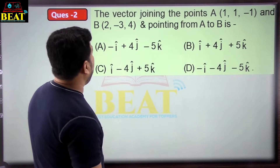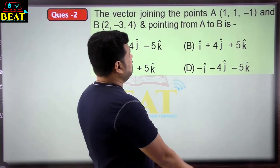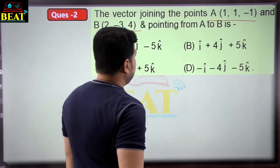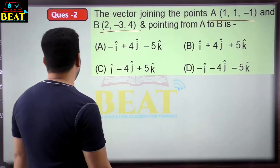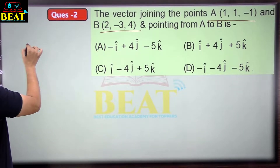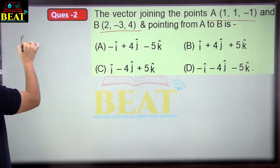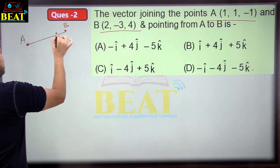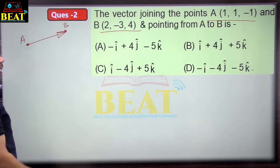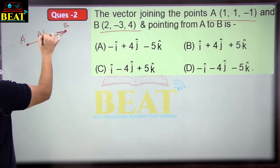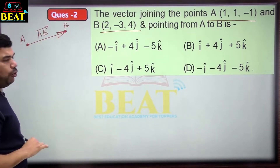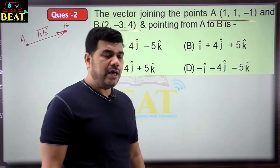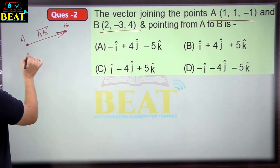The next question says: vector joining the points A and B, pointing from A to B. To find this, here is point A and here is point B. You need to find the vector AB. This vector is called the AB vector. How do we find vector AB? The AB vector is written as: position vector of B minus position vector of A.